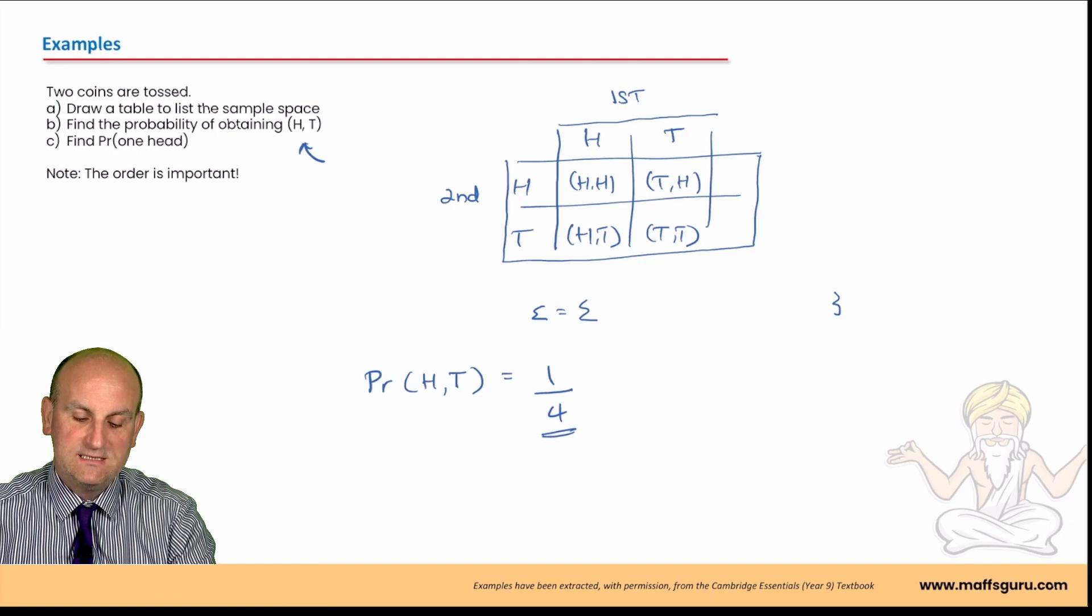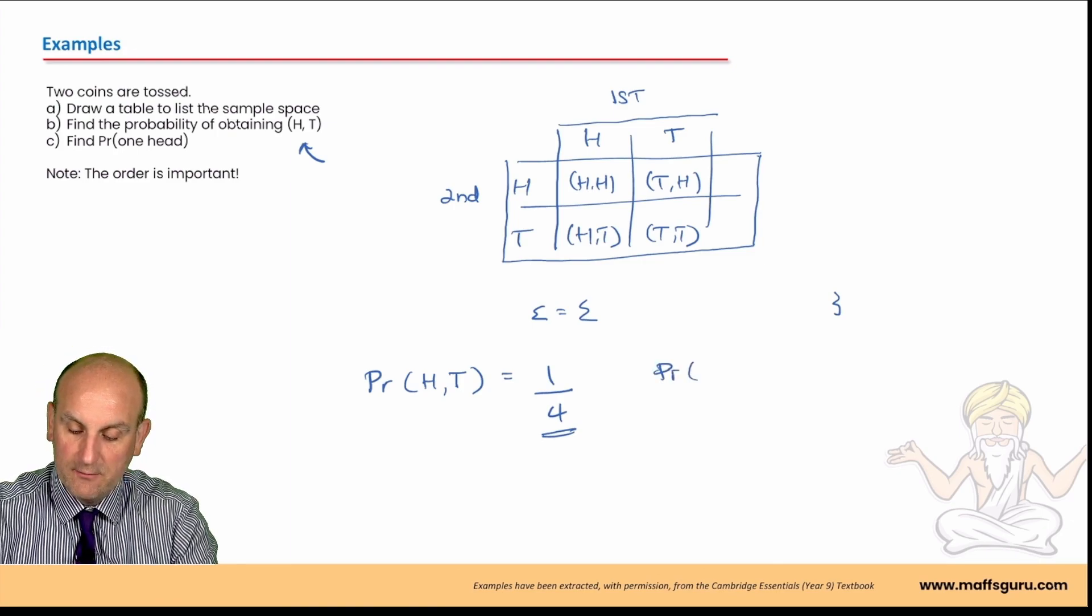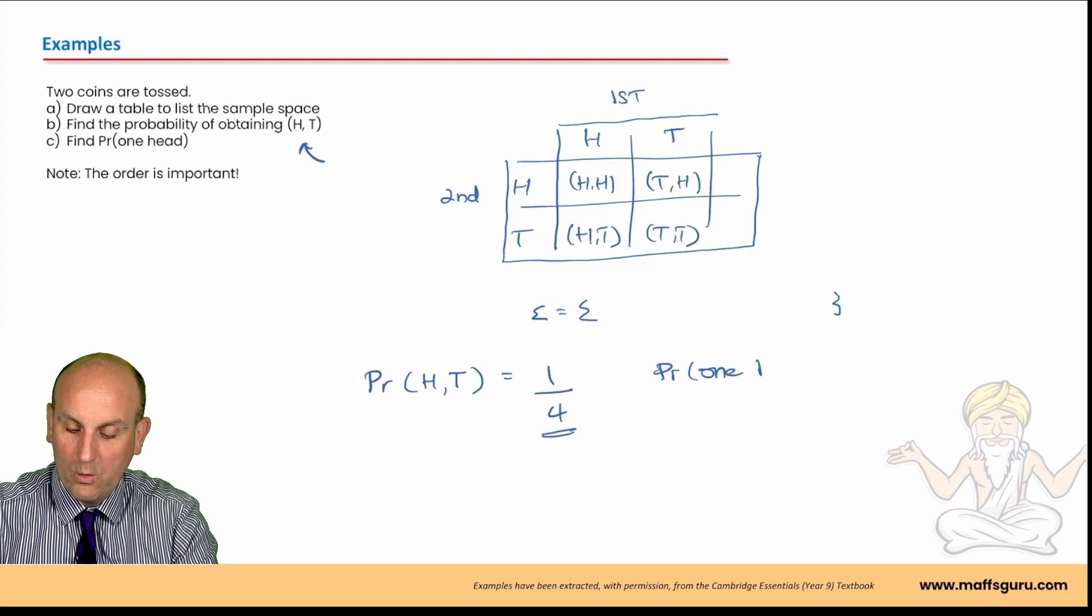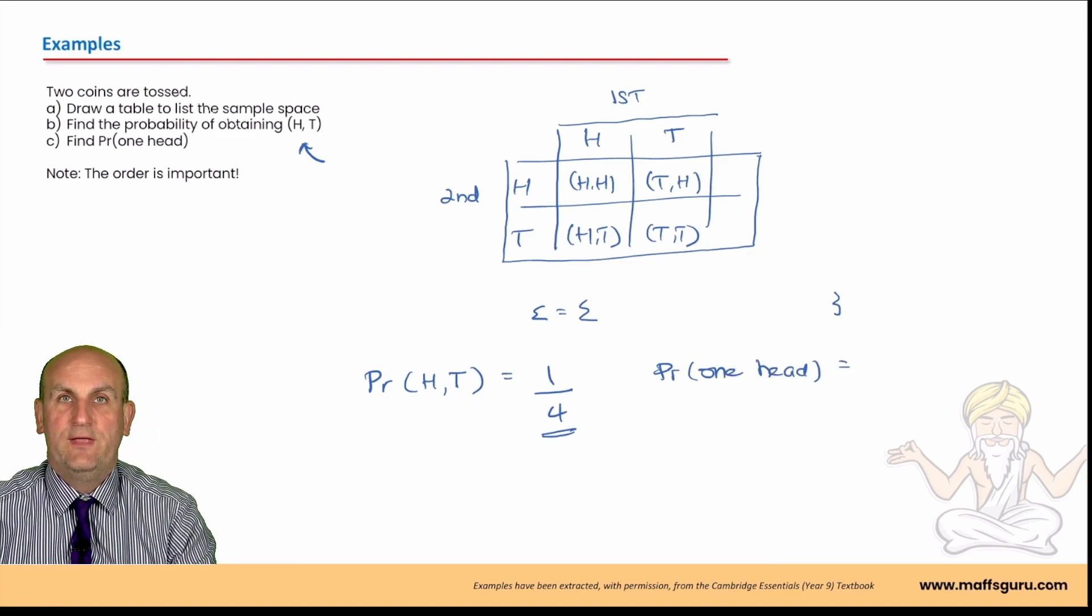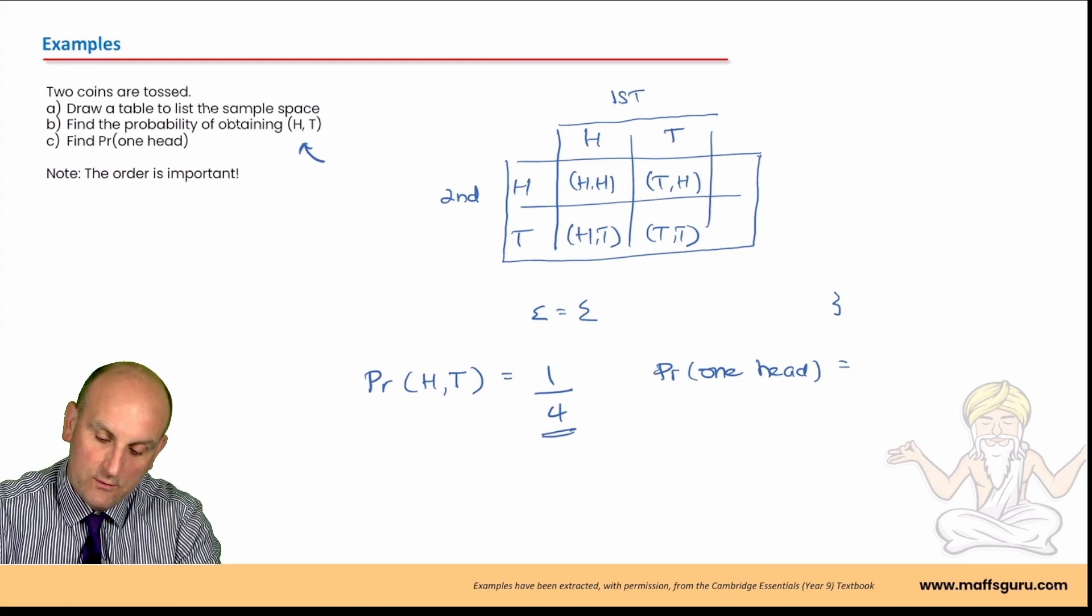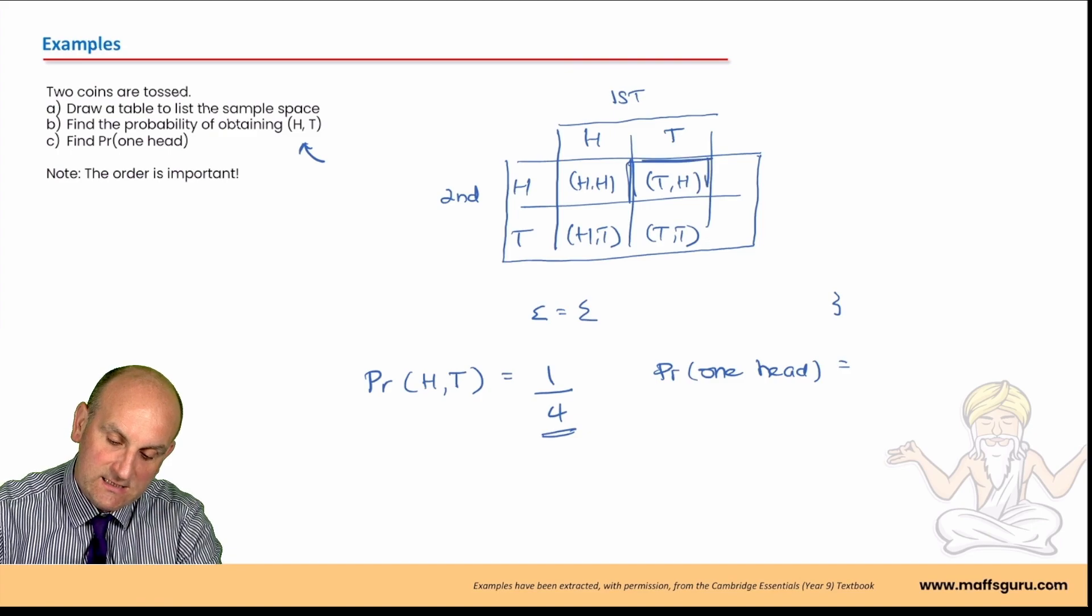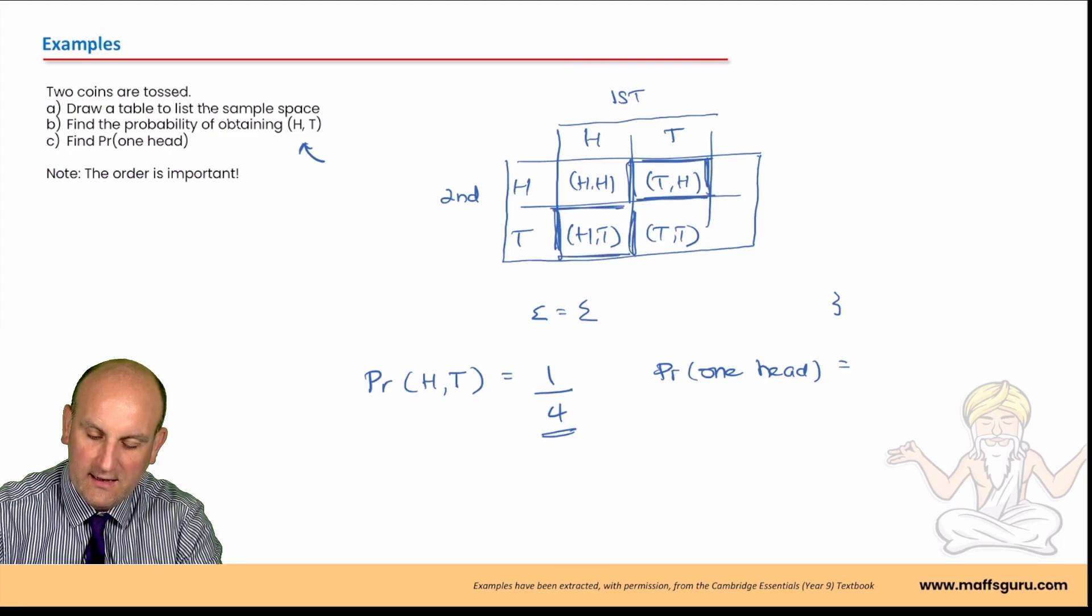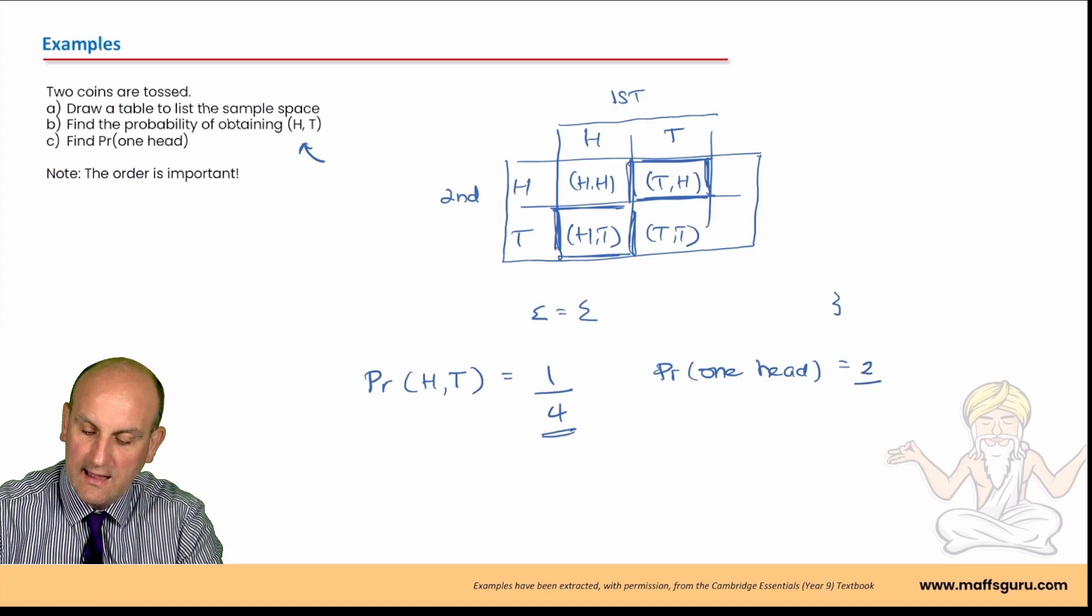Find the probability of one head. Now, what that means is the probability of only getting one head. So, how many different ways are there of there being just a H and a T? So, we've got one here, which is TH. That's only got one head in it. And then H comma T. That's got another head in it. So, that would be two out of four.